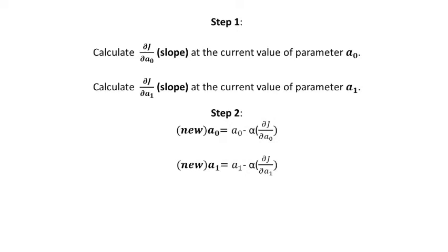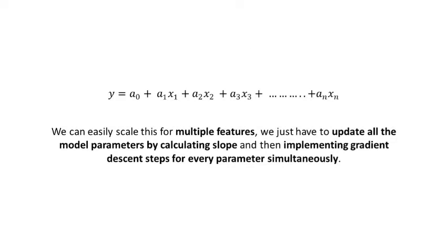Next, we need to take the step alpha and update the new parameters as follows. Third step would be to update the cost function with new a0 and a1, and then repeat step 1. These iterations should be done thousands of times. We can easily scale this for multiple features. As you know, our equation of linear regression for multiple features is y equals a0 plus a1x1 plus a2x2 and so on. We just have to update all the model parameters by calculating slope and then implementing gradient descent steps for every parameter simultaneously.